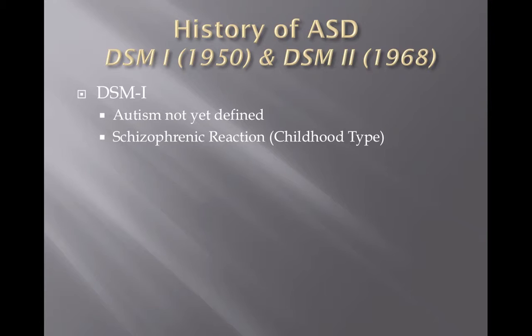Around this time, the DSM and DSM-II came out in the 1950s and 1960s, and they largely ignored Kanner and Asperger's work because autism had yet to be formally defined. The closest thing to defining individuals with these specific traits was under the diagnosis of schizophrenic reaction, childhood type. So even in the 50s and 60s, autism was still considered a subset of schizophrenia.